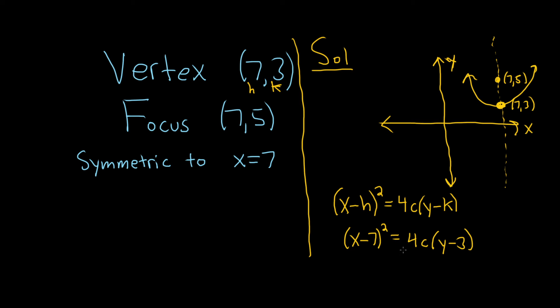And we just have to find c. So because it opens up, c is positive, and the distance between the focus and the vertex is always equal to the absolute value of c. So the distance between 3 and 5 is just 2, and because c is positive, it must be 2.